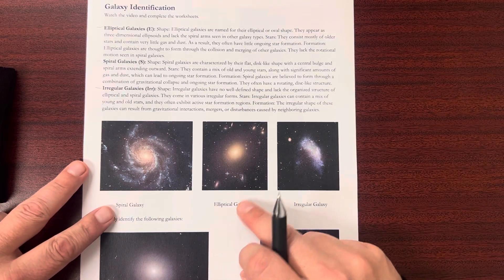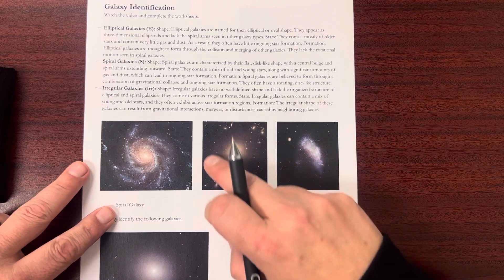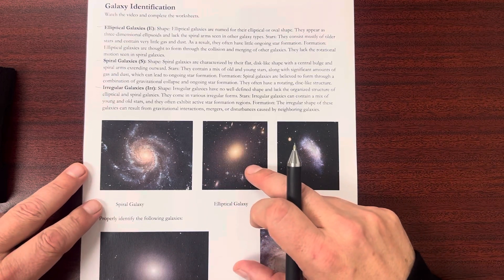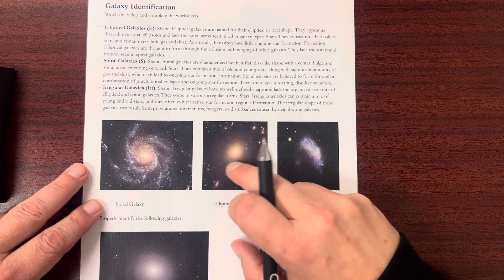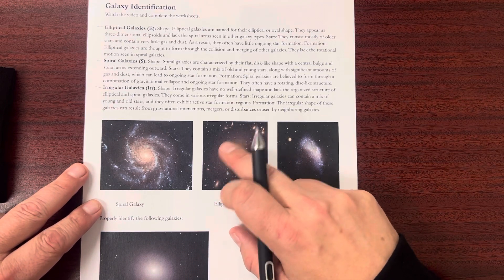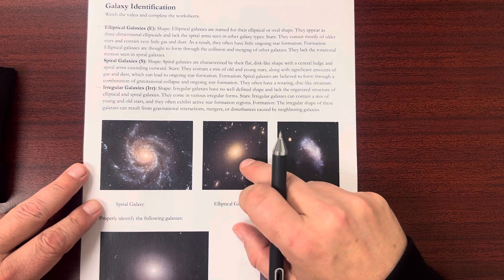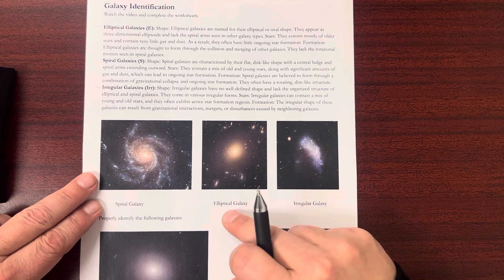Elliptical galaxies tend to be fairly uniform. They kind of look like a sphere or sometimes like a football, but they're kind of like a uniform cloud that you'll see here. That's the elliptical galaxies.